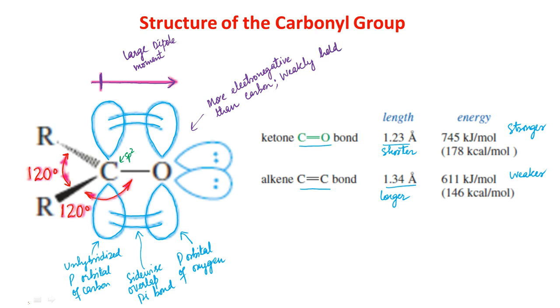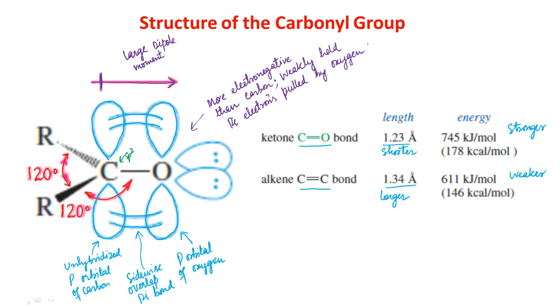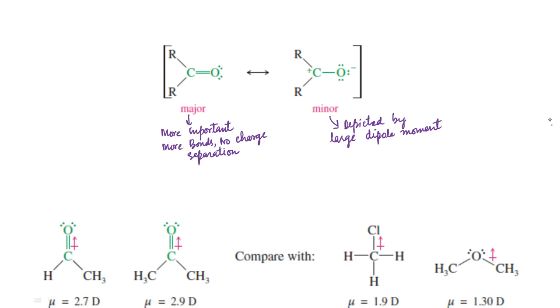In particular, the less tightly held pi electrons are pulled more strongly toward the oxygen atom, giving ketones and aldehydes larger dipole moments than most alkyl halides and ethers. We can use resonance forms to symbolize this unequal sharing of the pi electrons. The first resonance form is more important because it involves more bonds and less charge separation. The contribution of the second structure is evidenced by the large dipole moments of the ketones and aldehydes compared to that of alkyl halides and ethers.